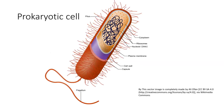A typical prokaryotic cell has a cell wall, and on the inside there's a plasma membrane — always a membrane on the inside of that. There is cytoplasm, which is the fluid on the inside of the cell, and these don't change. There are ribosomes — these are 70S ribosomes — and there's nucleic acid. That's pretty much it. It's a very simple sort of cell on the inside.